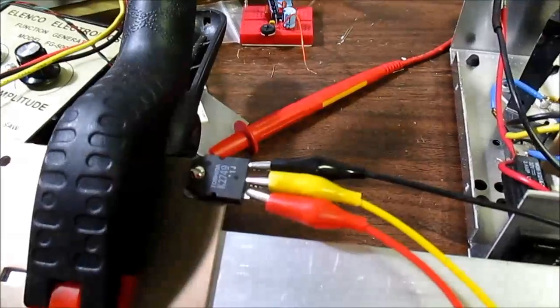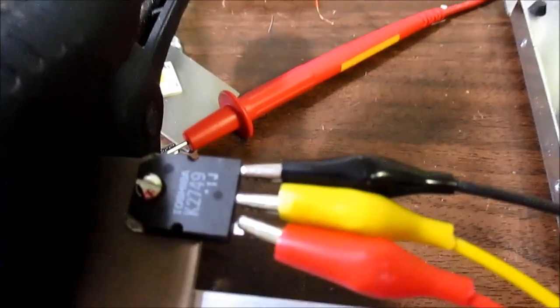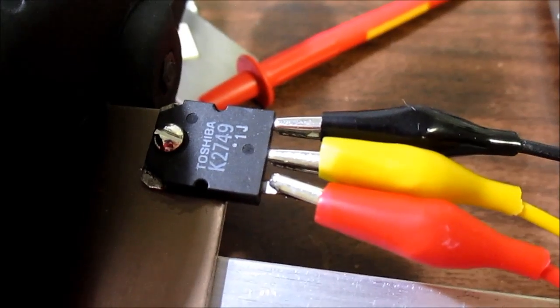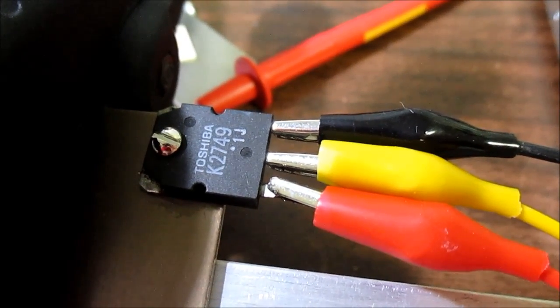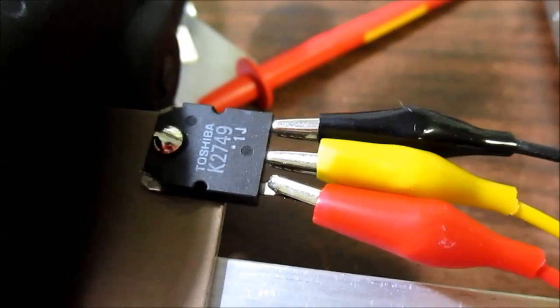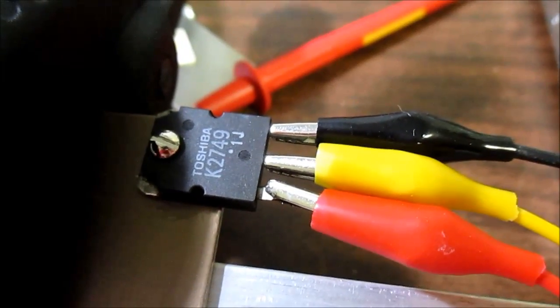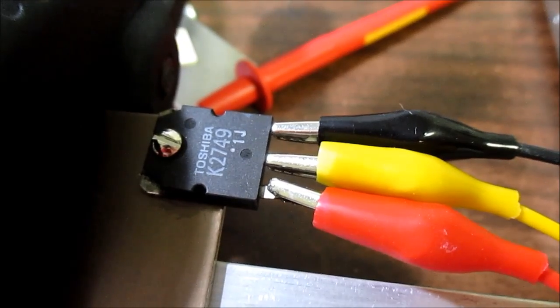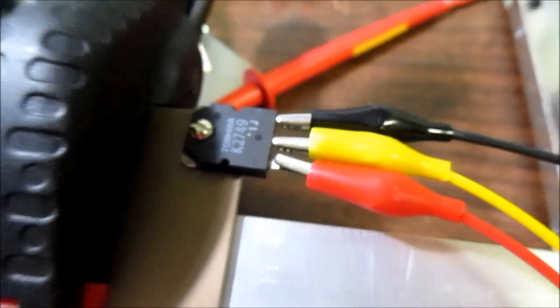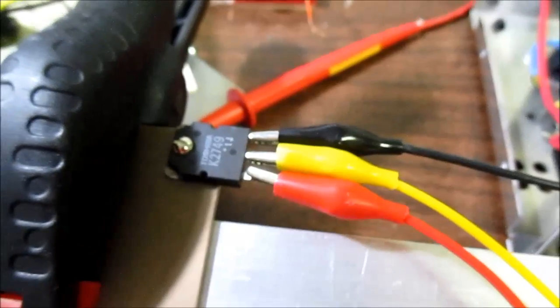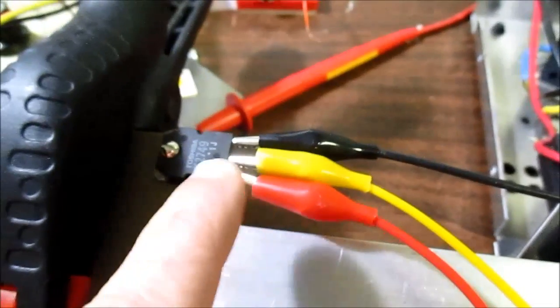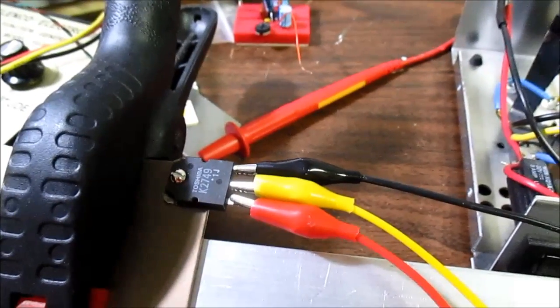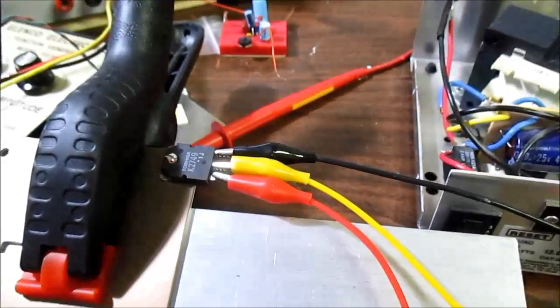Now I have a dummy load set up. I'm going to use a MOSFET transistor. In my parts drawer I found this 2SK2749, scavenged it out of something. But it has a dissipation rating of 150 watts.